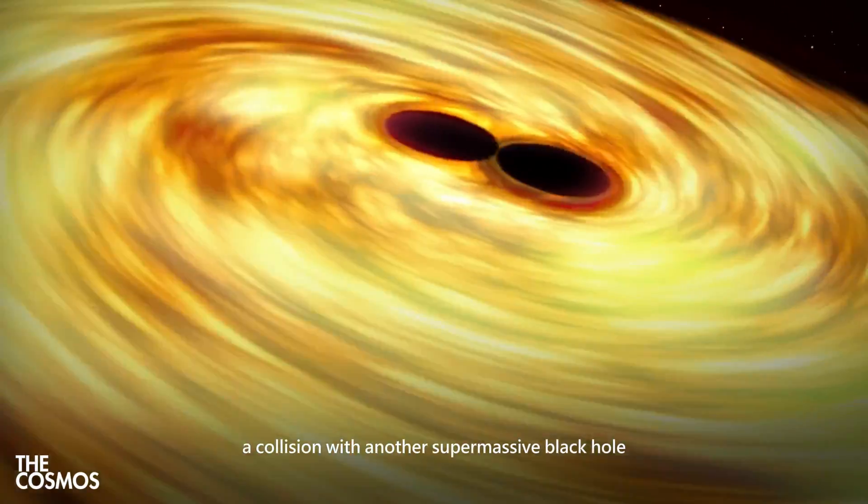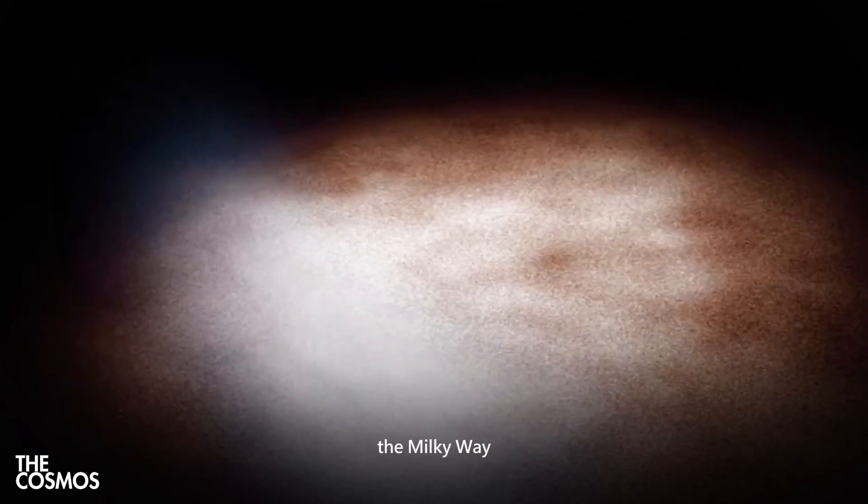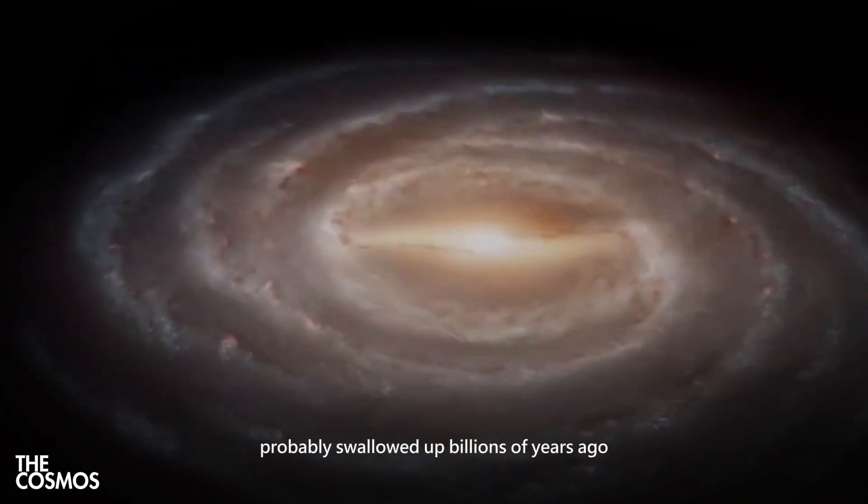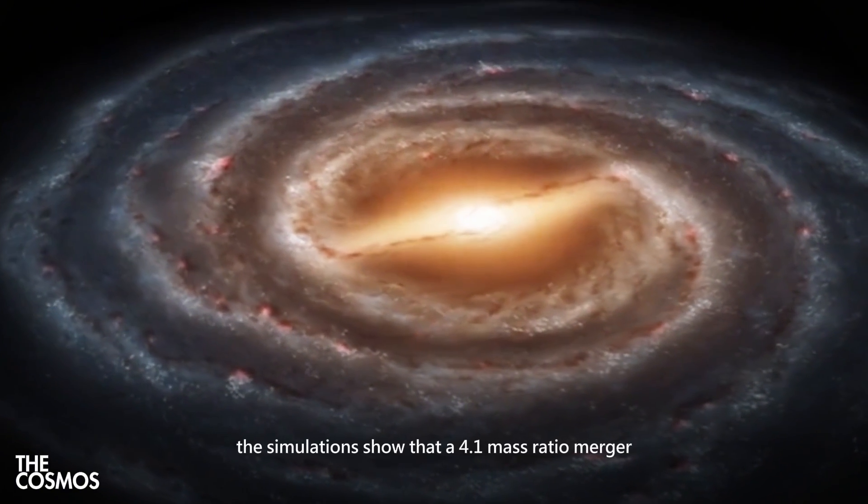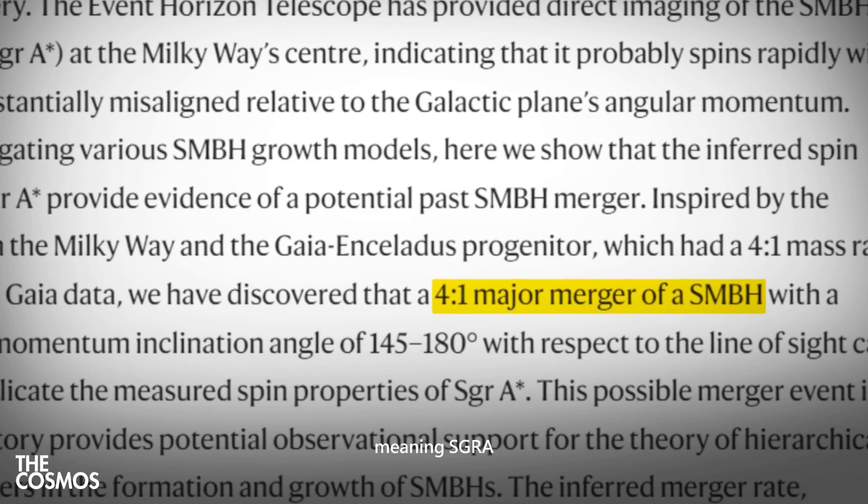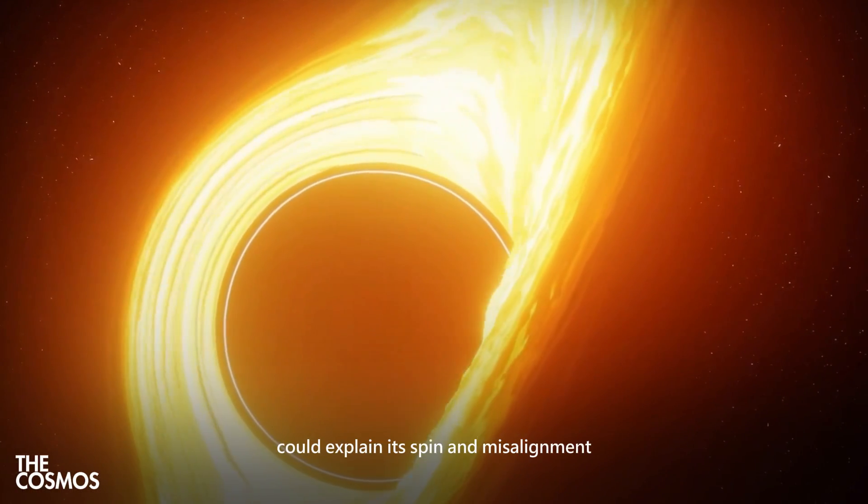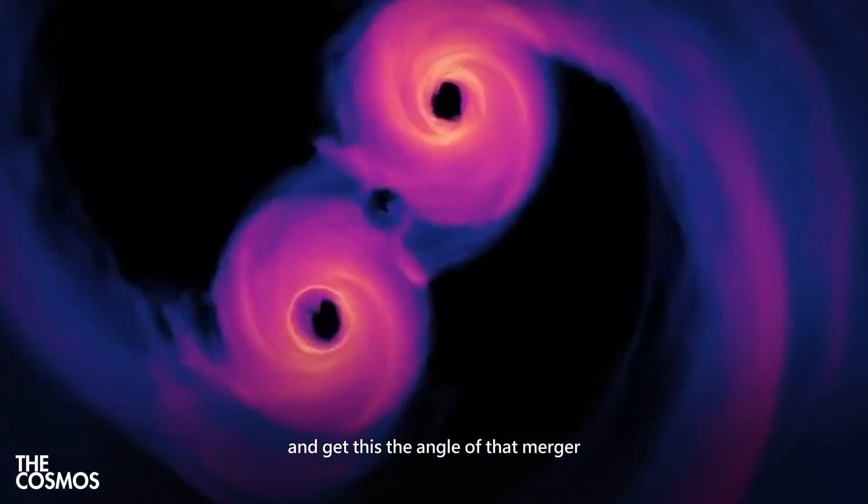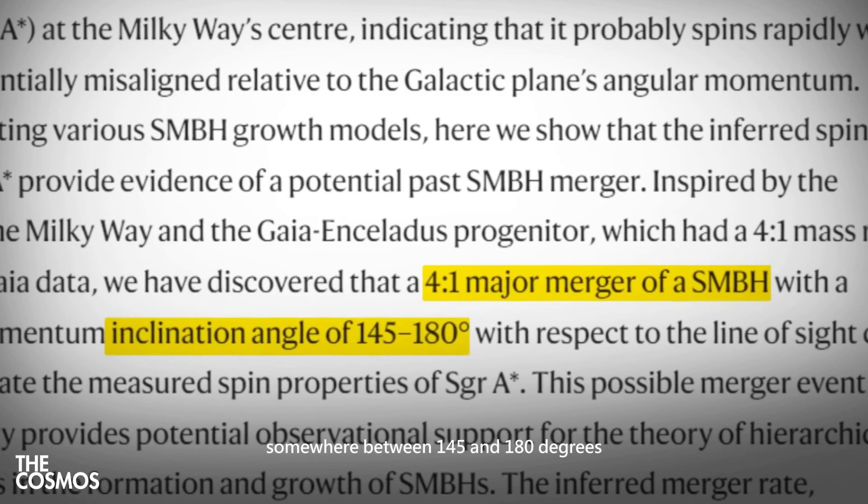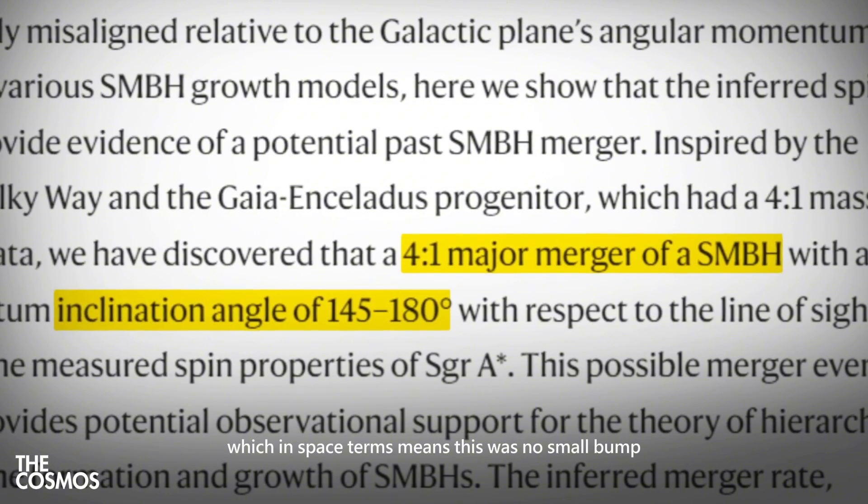Specifically, a collision with another supermassive black hole from a smaller galaxy that the Milky Way probably swallowed up billions of years ago. The simulations show that a 4.1 mass ratio merger, meaning SGRA was about four times bigger than its cosmic partner, could explain its spin and misalignment. And get this. The angle of that merger? Somewhere between 145 and 180 degrees, which in space terms means this was no small bump. It was a full-on galactic car crash.